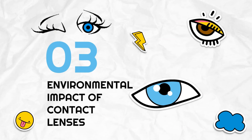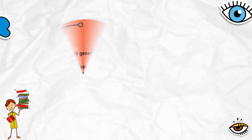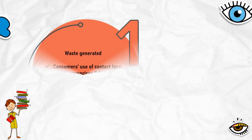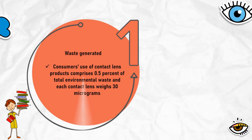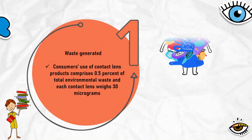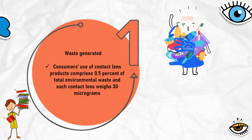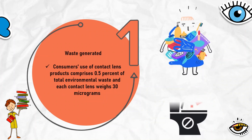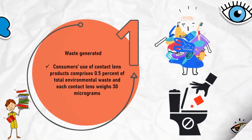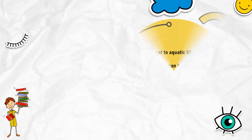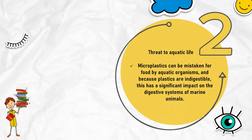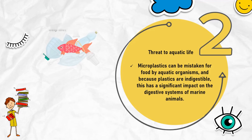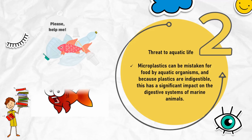The environmental impact of contact lenses. Waste generated through the use of contact lens products by the end consumer comprises 0.5% of total environmental waste, and each contact lens weighs 30 micrograms. Research discovered that among more than 400 contact lens wearers surveyed, 19% discard their contact lenses into the toilet or sink. Contact lenses are denser than water — they sink, posing a threat to aquatic species who may consume them. Microplastics can be mistaken for food by aquatic organisms, and because plastics are indigestible, this has a significant impact on the digestive systems of marine animals.